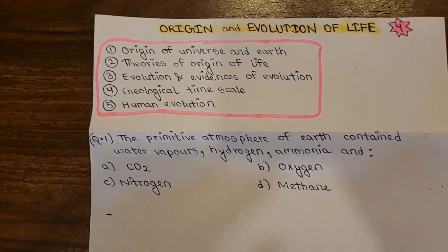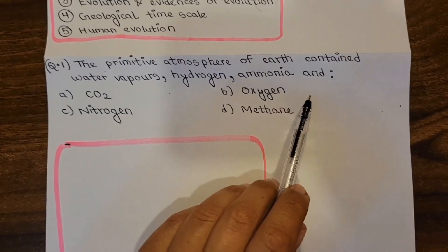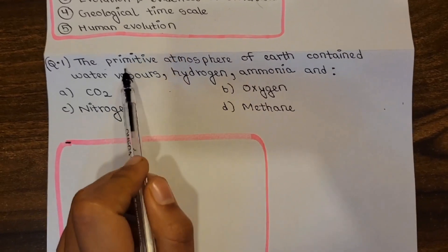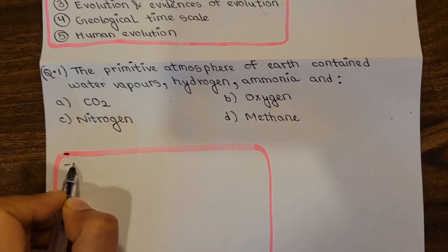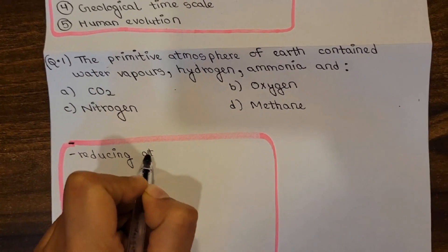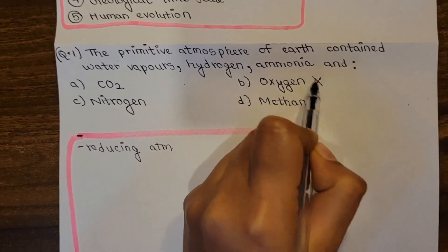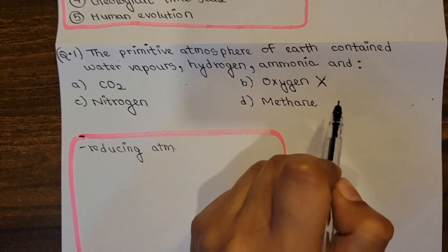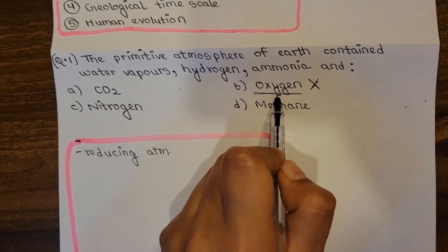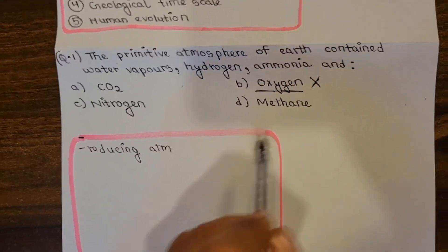The first question: the primitive atmosphere of earth contained water vapor, hydrogen, and ammonia. Earth was formed 4.6 billion years ago, and its atmosphere was a reducing atmosphere — not an oxidizing atmosphere. There was no free oxygen at that time. A past exam question from 2021 asked which gas was not present in the free state — the answer is oxygen, because the primitive atmosphere was reducing, not oxidizing.